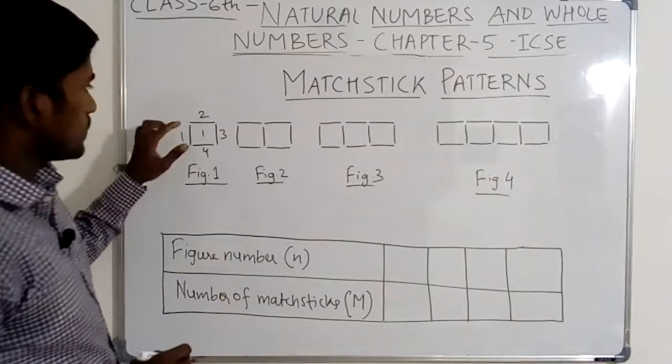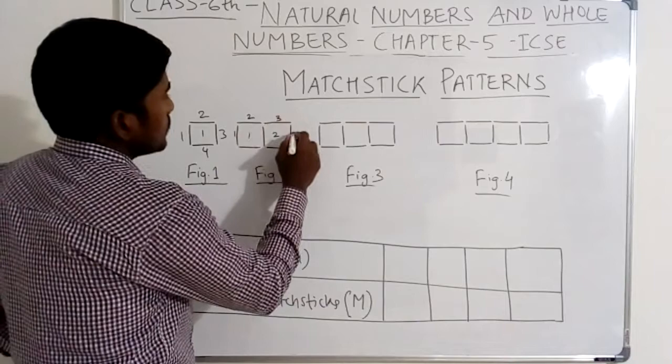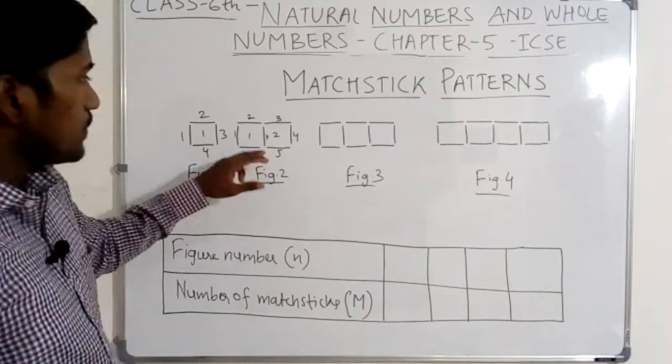In figure number 2, how many squares are there? One, two. How many mastic are used here? Let's count — one, two, three, four, five, six, and seven. Seven numbers of mastic are used in figure number 2.